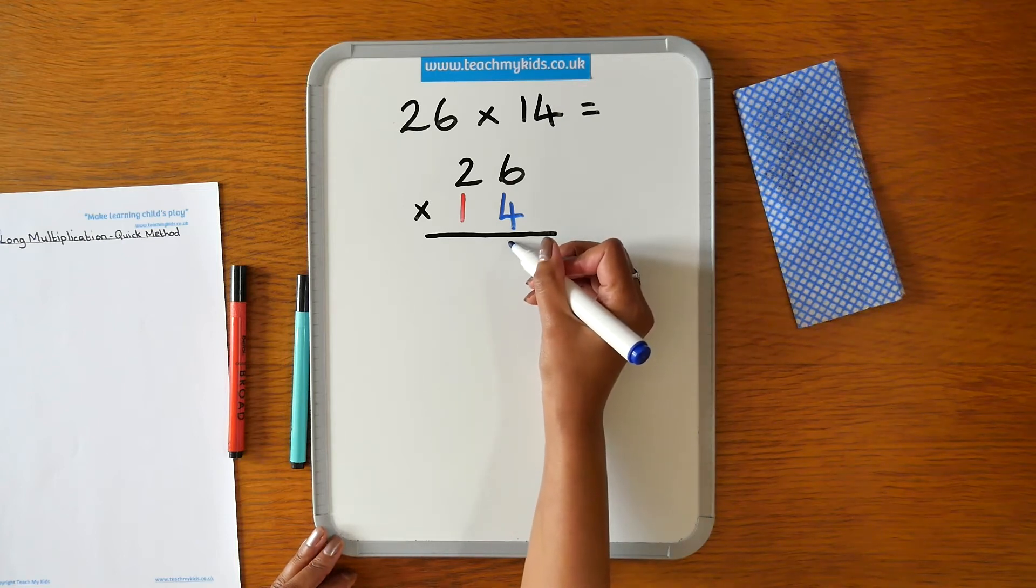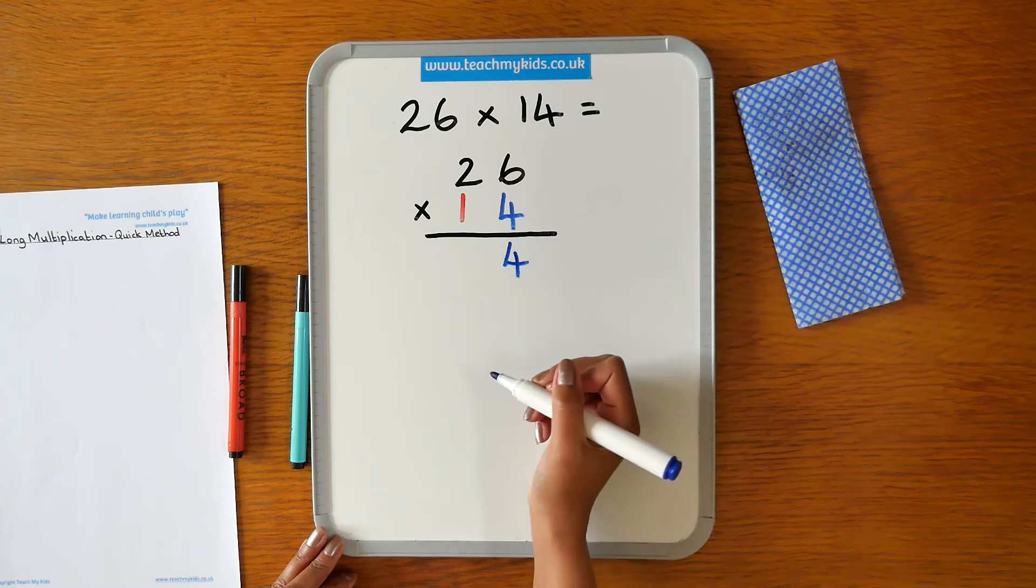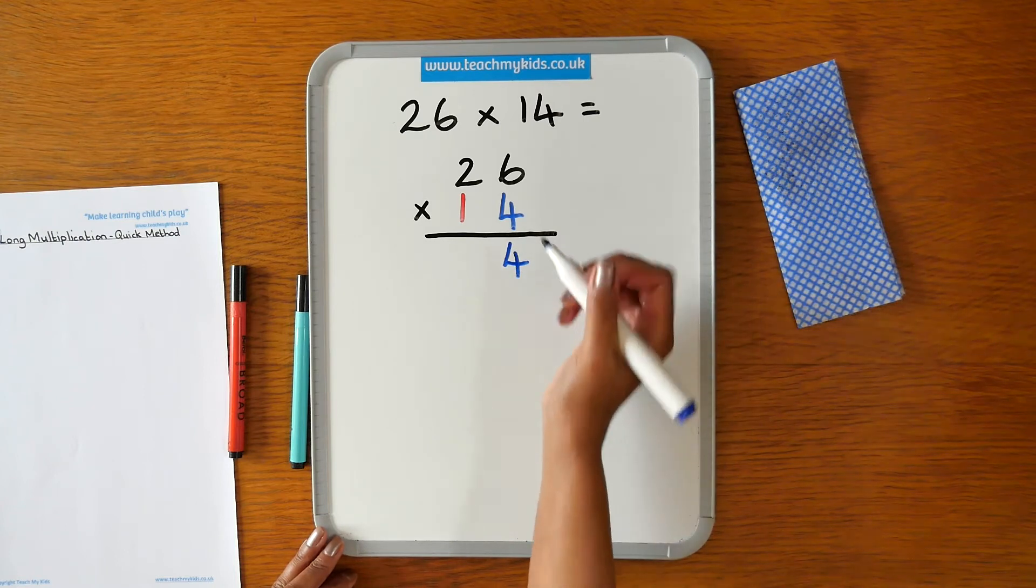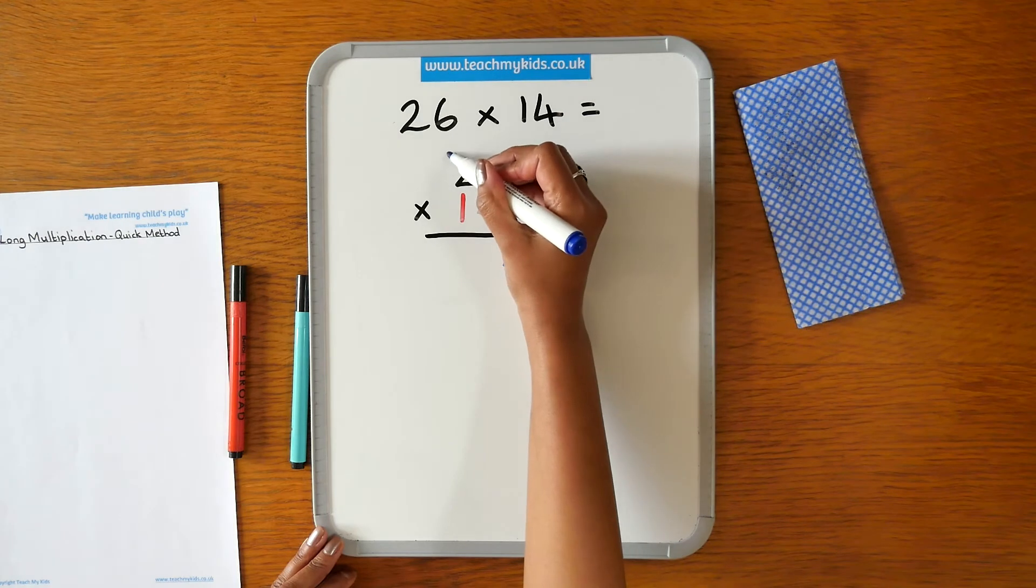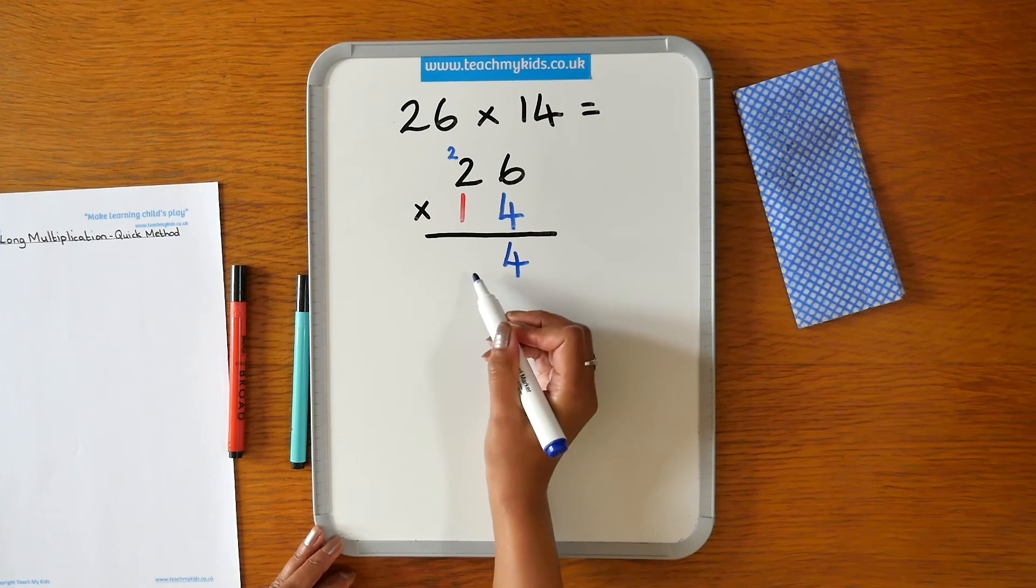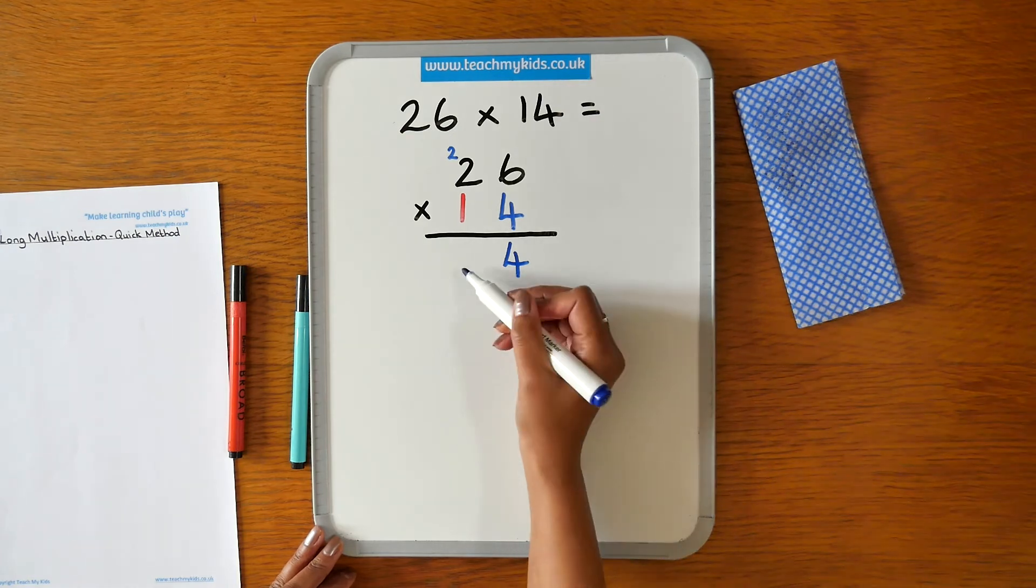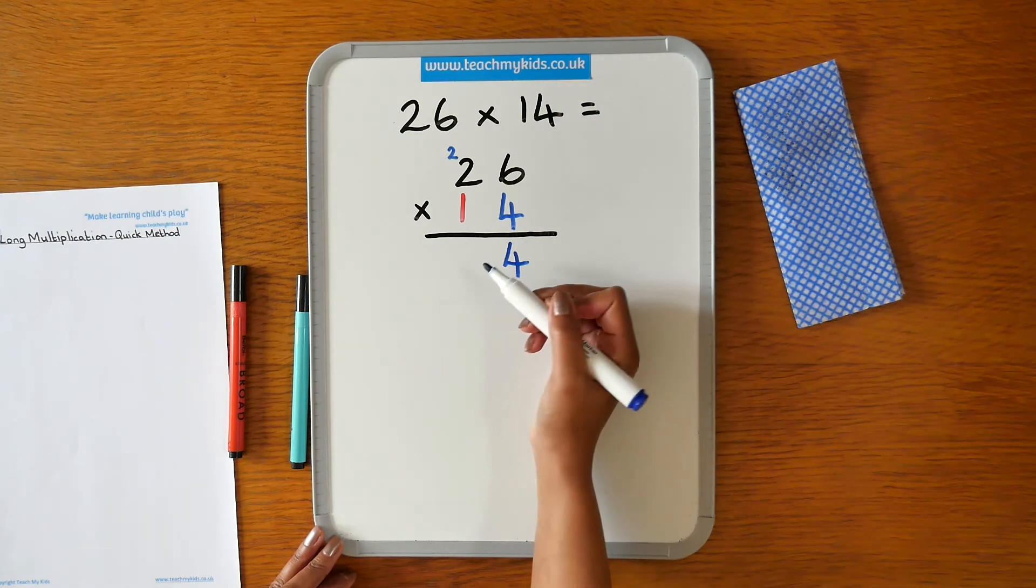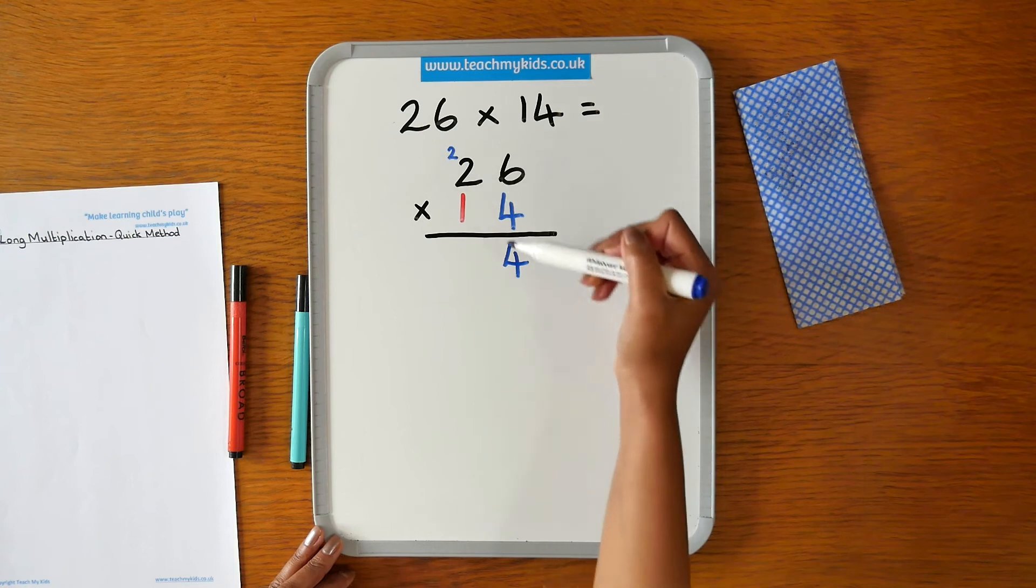We place the 4 in the units column and we've got a 2 which we're going to carry over. You can put the 2 at the top. Some of you might be used to putting the number 2 at the bottom here to carry over. That's fine. You can do it however you feel is easier for you. So we've got our 24 there.